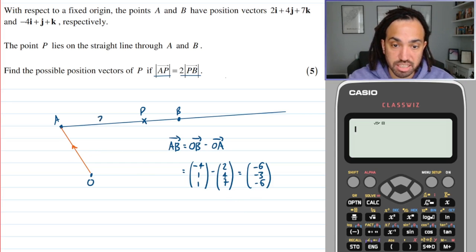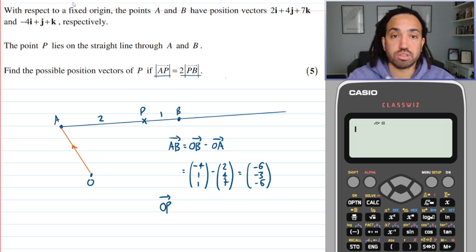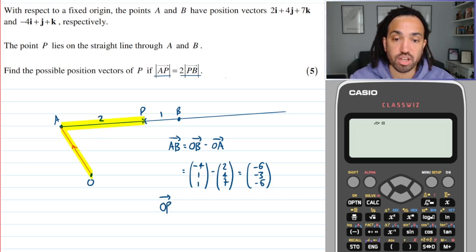So now because I said that this was two parts and that was one part, if I want to find O to P then what I would do is I would travel down here so that's O to A and then I would need just to add on two thirds of A to B because it's two parts out of three.